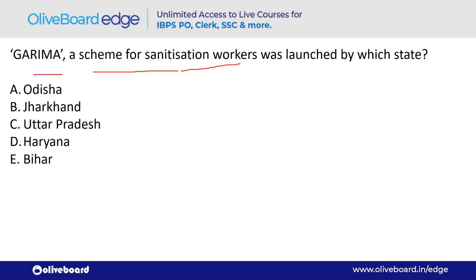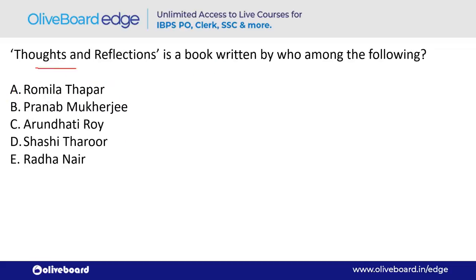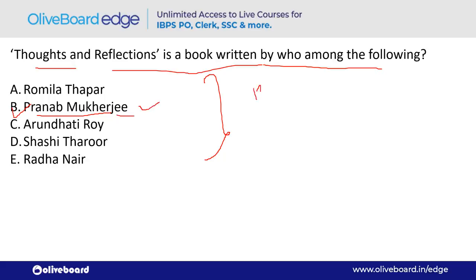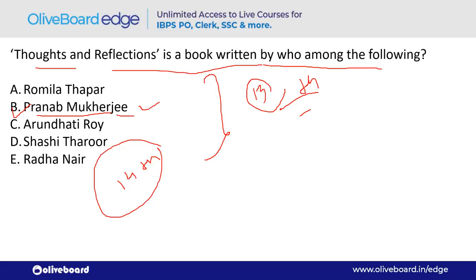Regarding the Garima scheme for sanitation workers: the 13th President of India was Pranab Mukherjee. The 14th President is Ramnath Kovind — the current president of India.